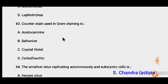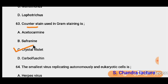Question 63: Counter stain used in gram staining. In gram staining, crystal violet is used for gram-positive bacteria and safranin for gram-negative bacteria. So when we use a counter stain, crystal violet is used.